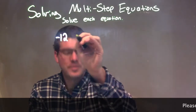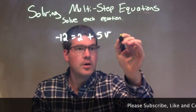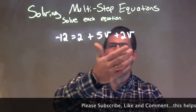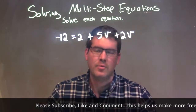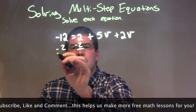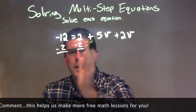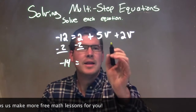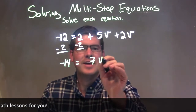Negative 12 equals 2 plus 5b plus 2b. What I want to do is combine my like terms on one side of the equation and bring all my numbers to the other side. I'm going to subtract 2 from both sides, leaving my two variables on the right and bringing my numbers to the left. So negative 12 minus 2 is negative 14. And I'm going to combine 5b plus 2b, which comes out to be just 7b.